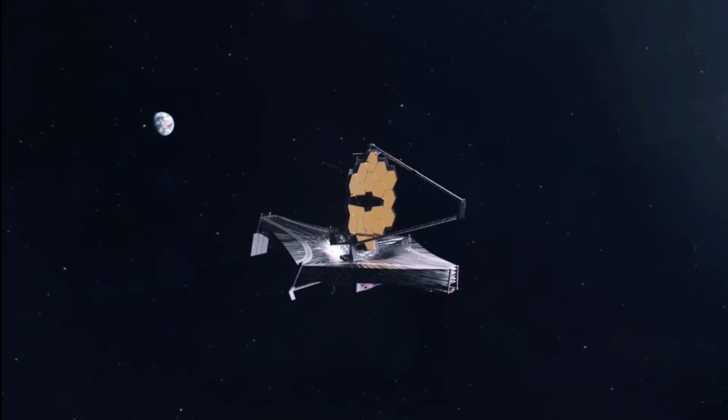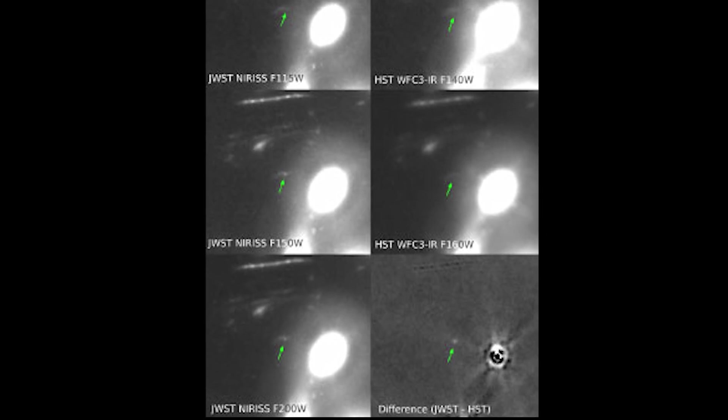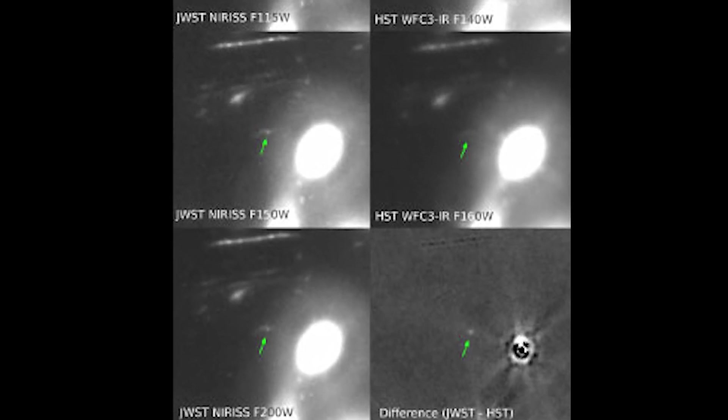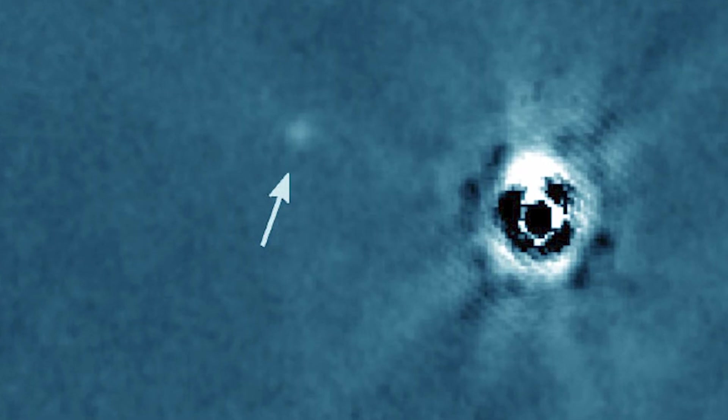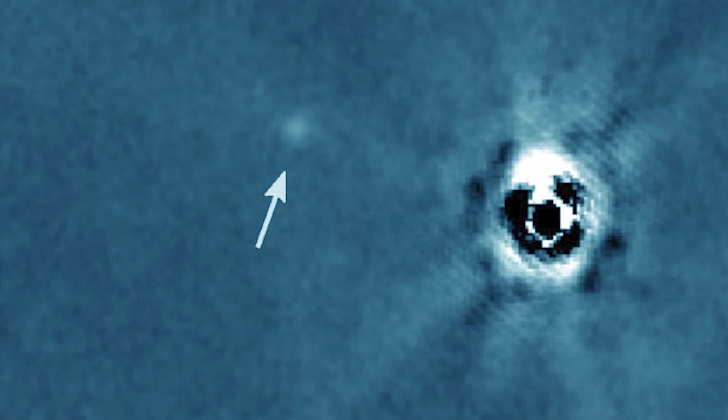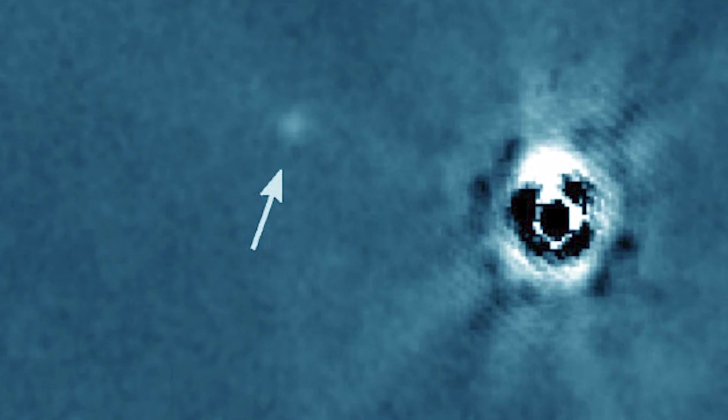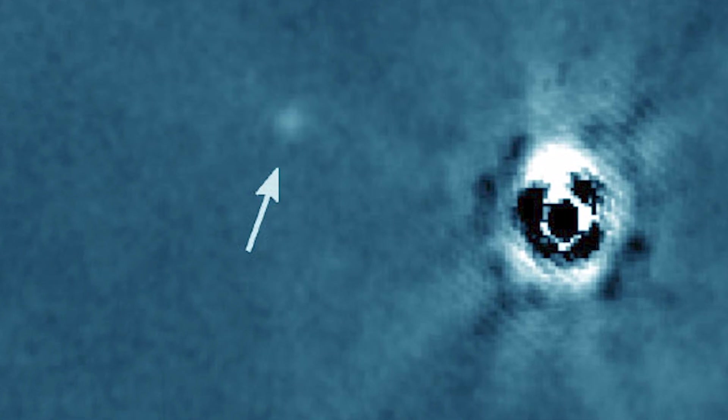NASA's James Webb Space Telescope detects newly discovered blue supergiant star in the early universe. The recently discovered blue supergiant was formed when the universe was roughly 2.6 billion years old and is significantly hotter than the Sun.